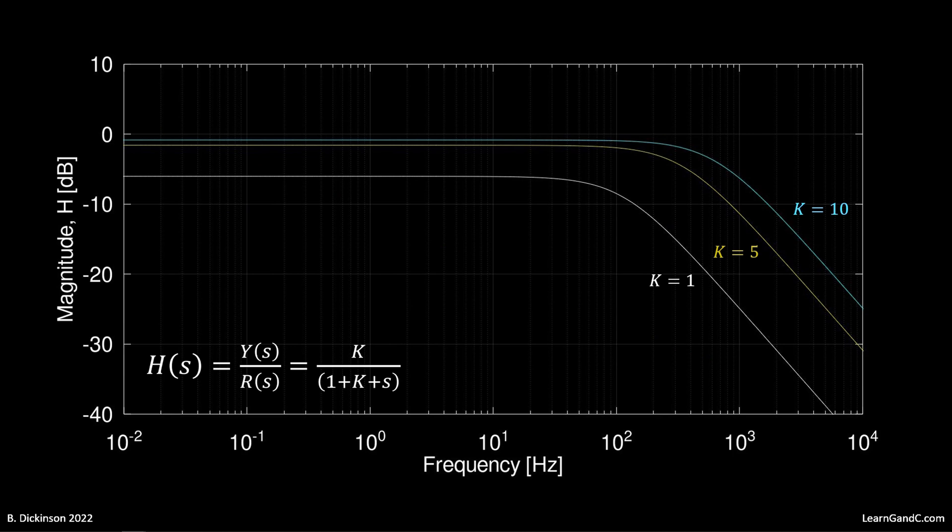Now, here's the closed-loop frequency response for increasing gain values. At low frequency, as the gain increases, the magnitude of the closed-loop response approaches 1, that is, tracking error decreases.